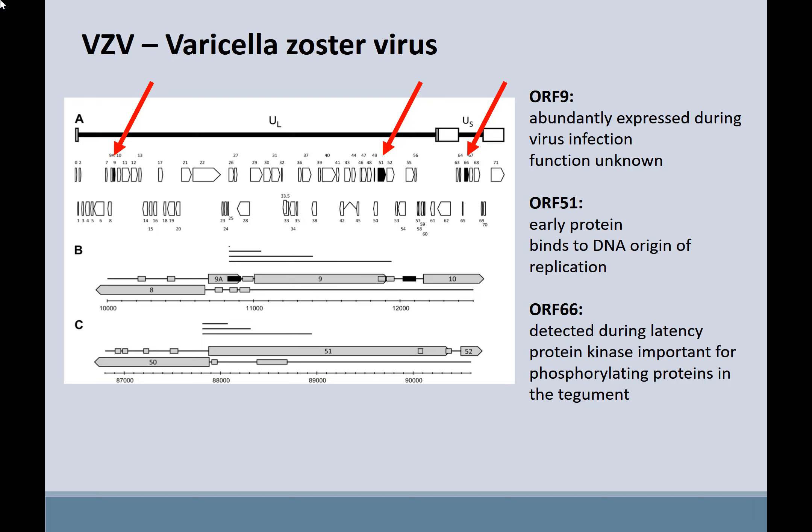They're also looking at three different VZV genes. Open reading frame 9 is abundantly expressed during virus infection, so that should be one they can observe RNA polymerase initiating and going through transcription. Open reading frame 5 is an early protein — one they would predict would be actively expressed. And open reading frame 66 is a protein detected during latency, later on in the virus infection.